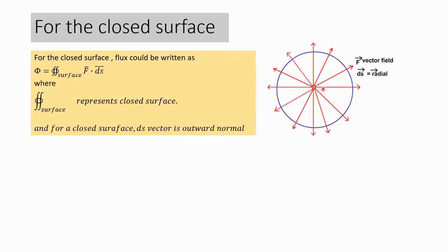For a closed surface, you could see that ds vector is along the radial direction, so it is also along the normal direction or called the outward normal.